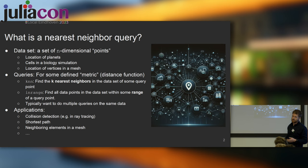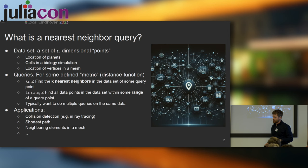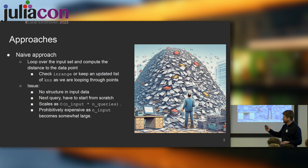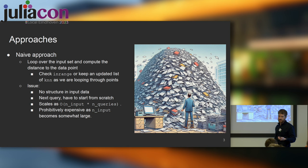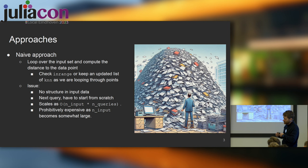Different applications include collision detection and ray tracing, shortest path algorithms, and finding neighboring elements in a mesh. The naive approach is just a loop over the input set where we compute distances to each data point, checking if a point is in range or maintaining a list of K nearest neighbors. The problem is there's no structure in the input data, so the next time we do a search we have to start from scratch. It scales very badly since we're potentially doing all comparisons.